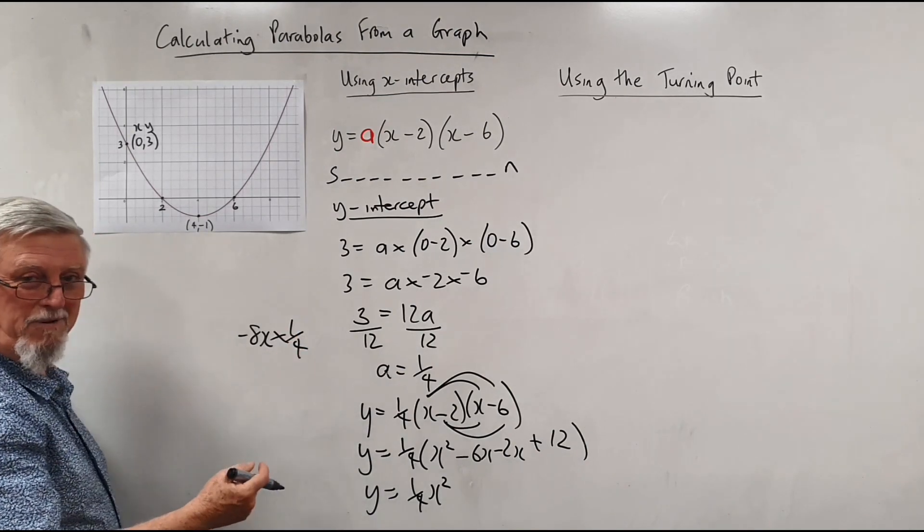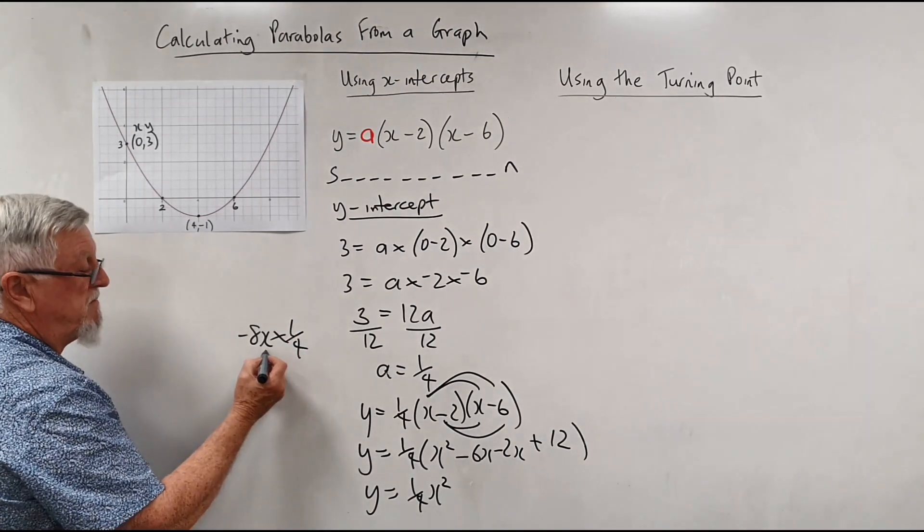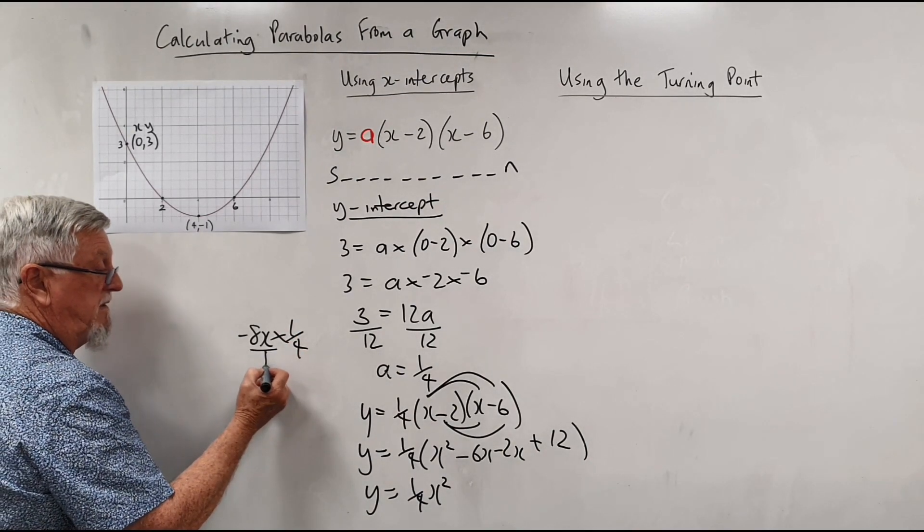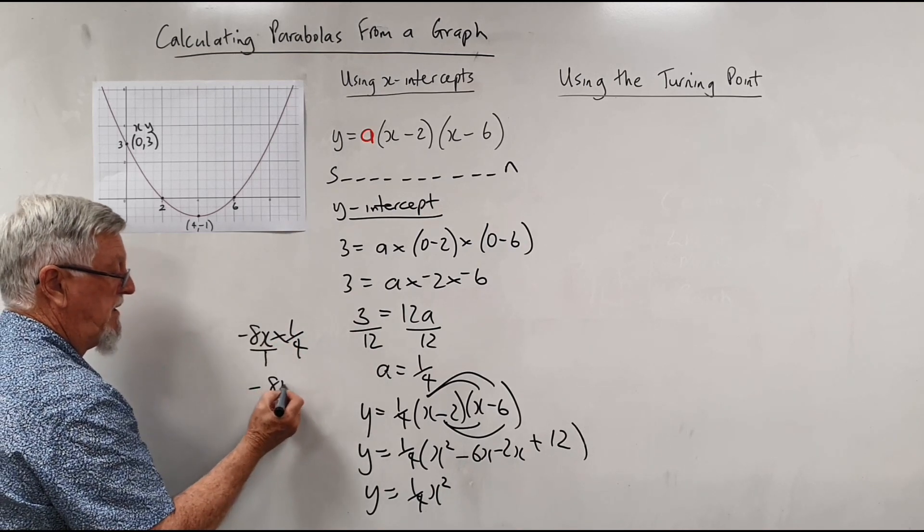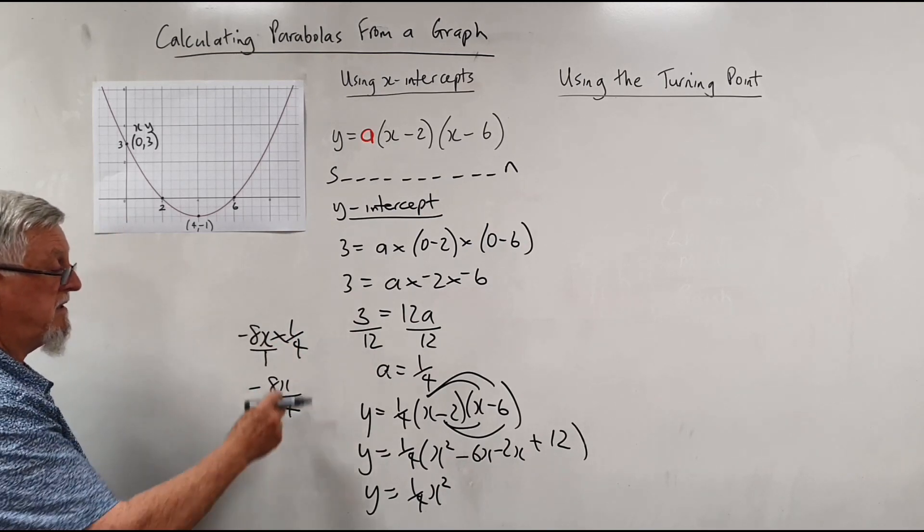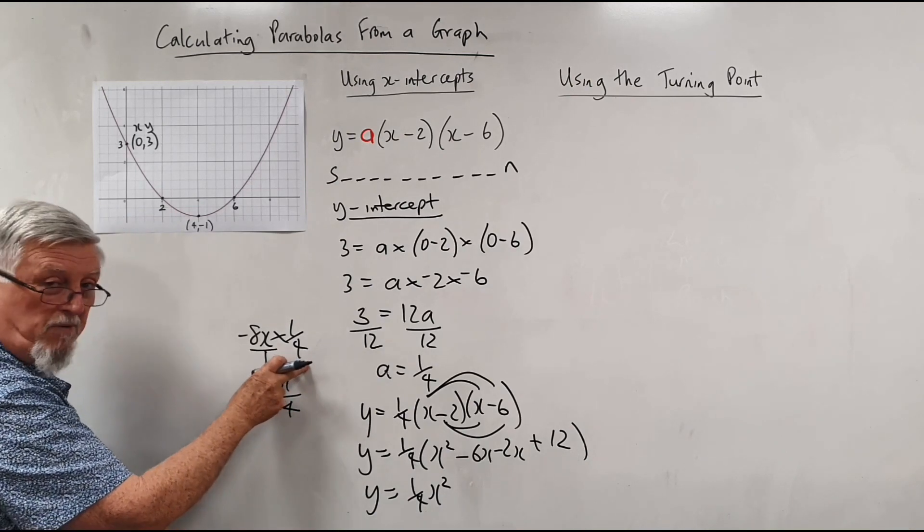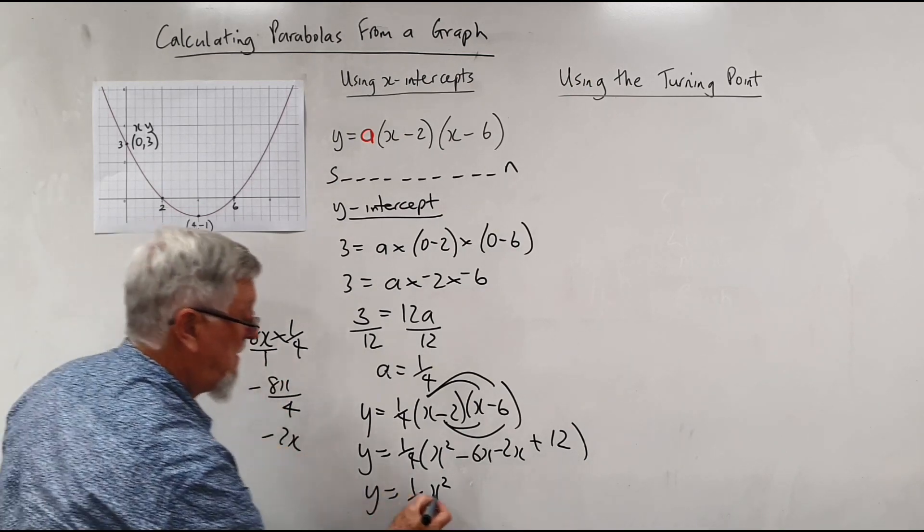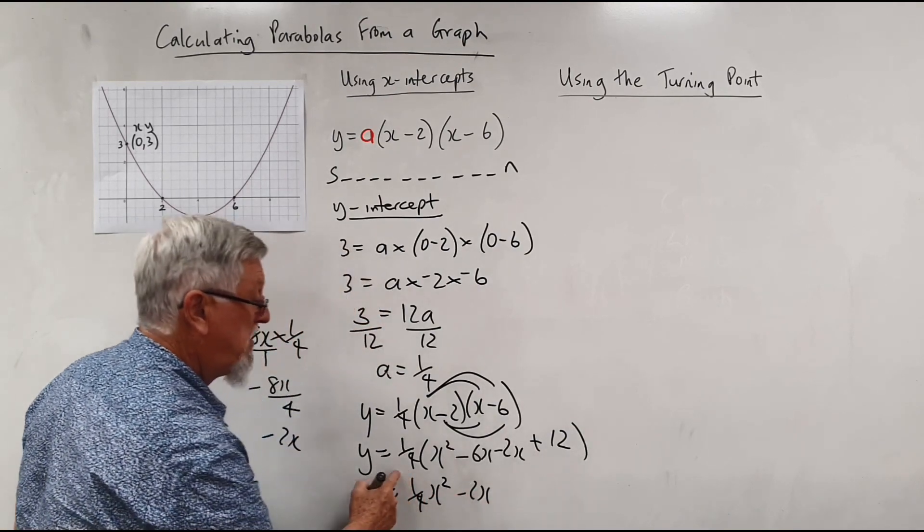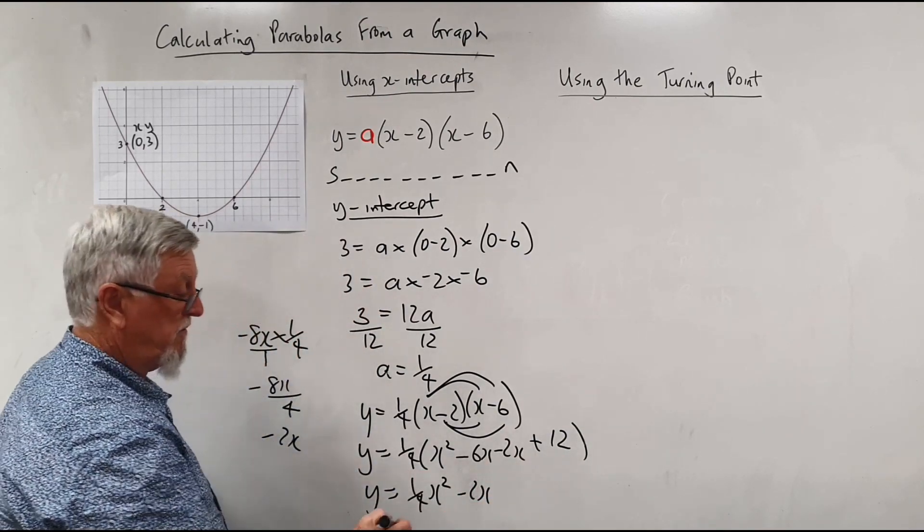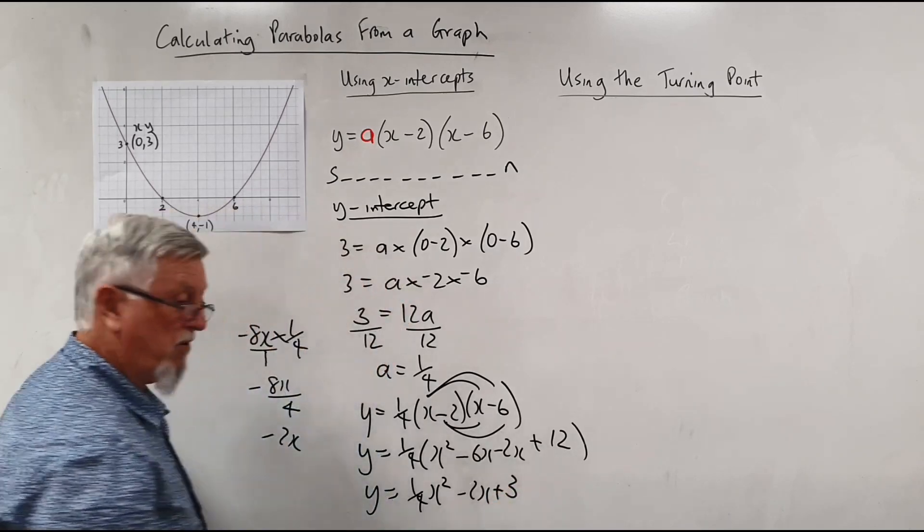So really all that is, is minus 8x, and I'm going to do it slowly for a moment, times by that quarter. So you multiply the tops and multiply the bottoms, because really that's 8x over 1. So I'm left with minus 8x over 4. See a number of people I've seen make mistakes with fractions, it's minus 2x. So I've got minus 2x, then you've got a quarter of 12, and the quarter of 12 is 3, and there's our equation.